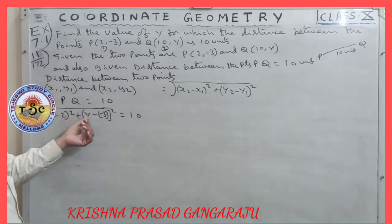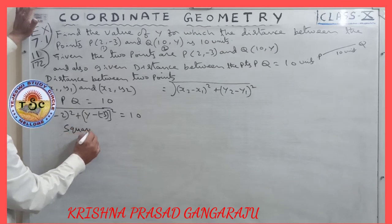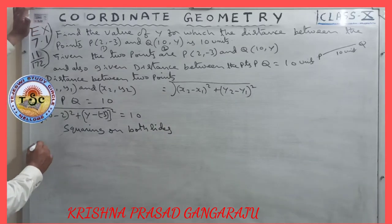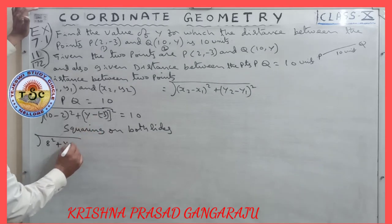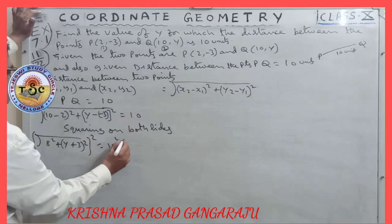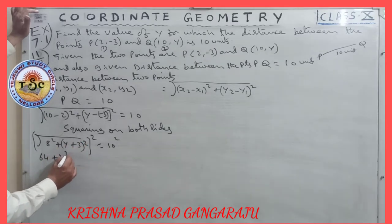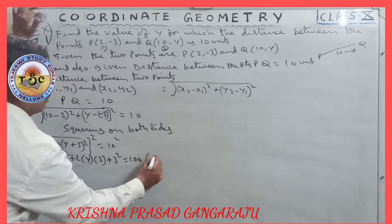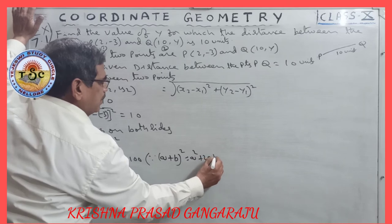So x2 minus x1 whole square plus y2 minus y1 whole square equals the value. Squaring both sides, the square root cancels: 8 squared plus (y + 3) whole square equals 10 squared. Expanding (y + 3)² using the identity (a + b)² = a² + 2ab + b².